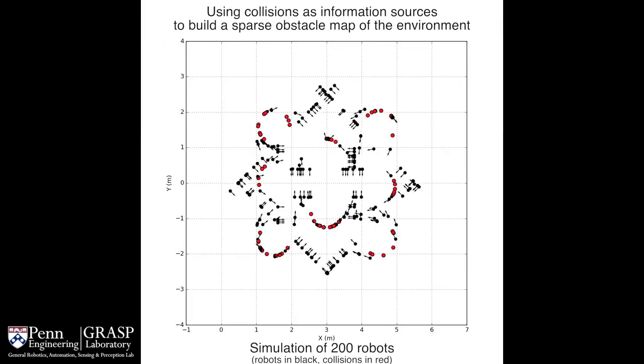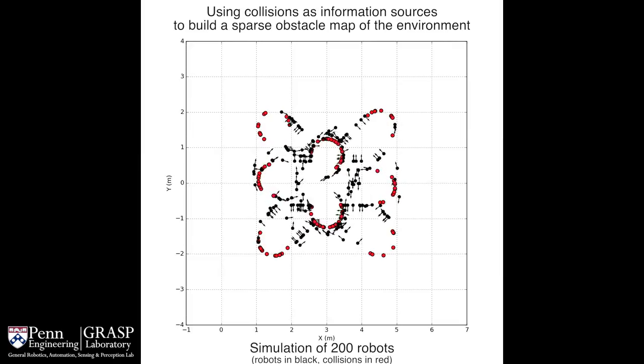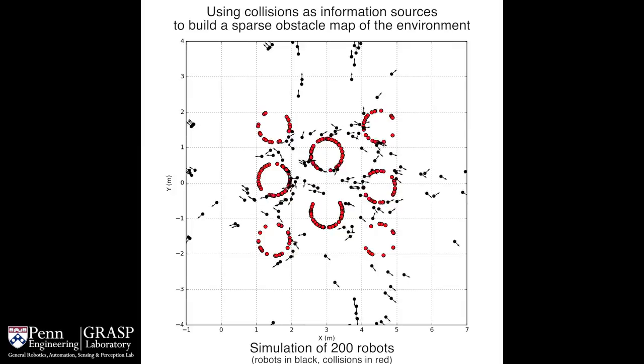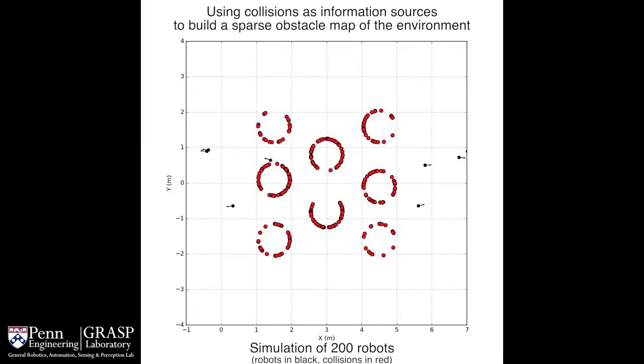Next, we show that collisions of the robots with obstacles can be harnessed as a source of spatial information which can in turn be used to construct a sparse map of the unknown environment.